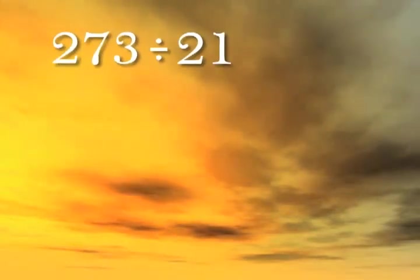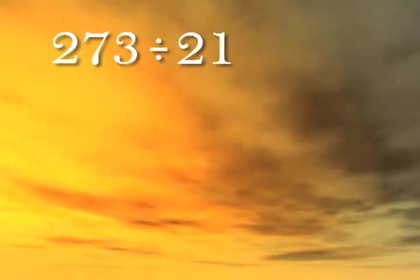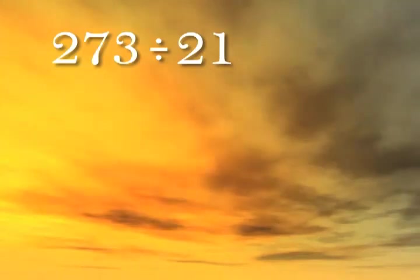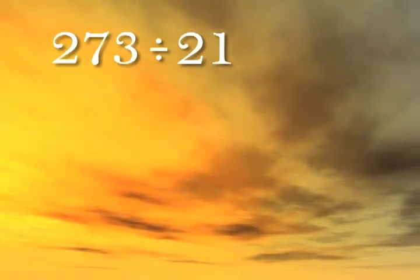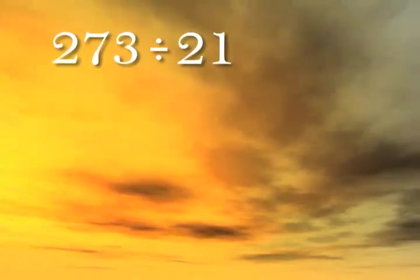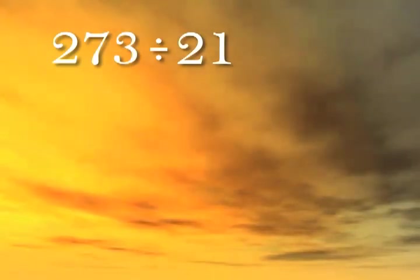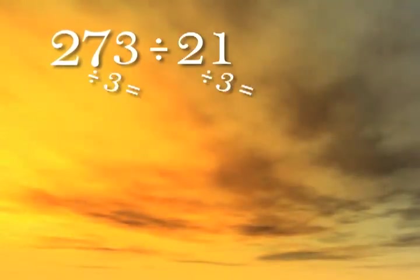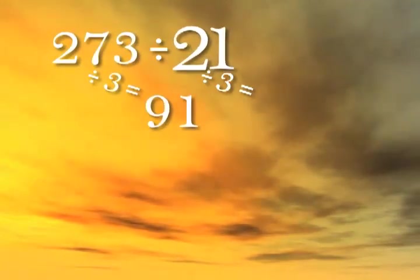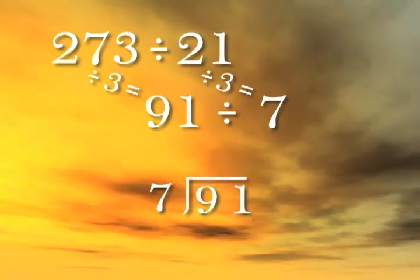Let's simplify and solve this next problem. 273 divided by 21. Both numbers are divisible by 3, because their digits add to 3 or add to a multiple of 3. 2 plus 1 equals 3, and 2 plus 7 plus 3 equals 12, which is a multiple of 3. Let's divide both numbers by 3. 273 divided by 3 is 91. 21 divided by 3 is 7. So our new problem is 91 divided by 7.